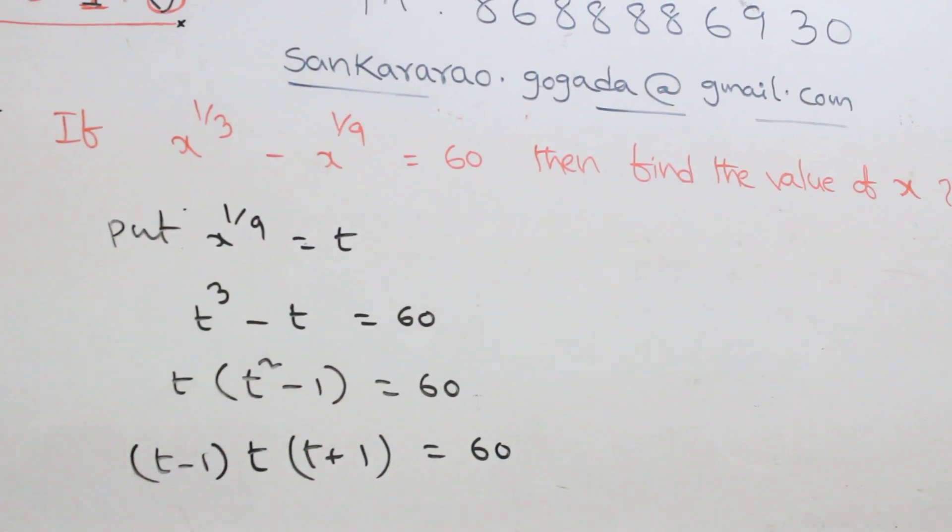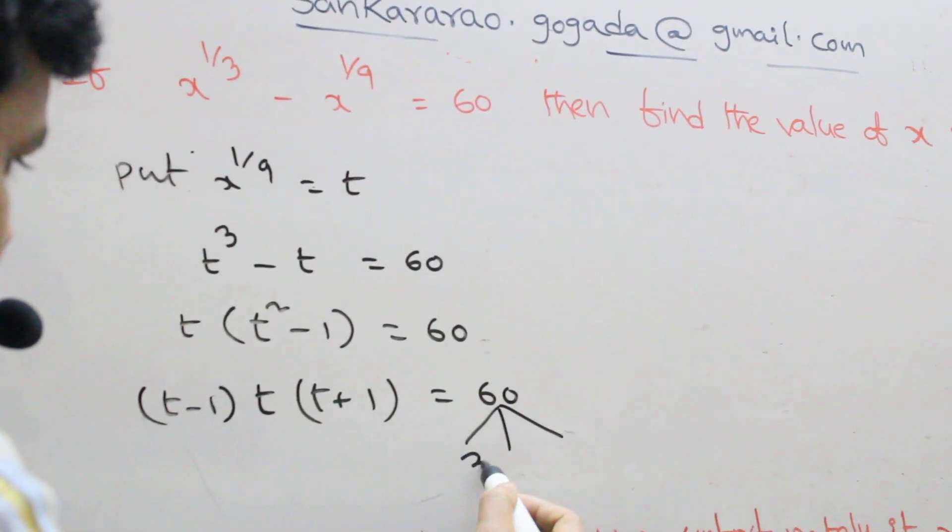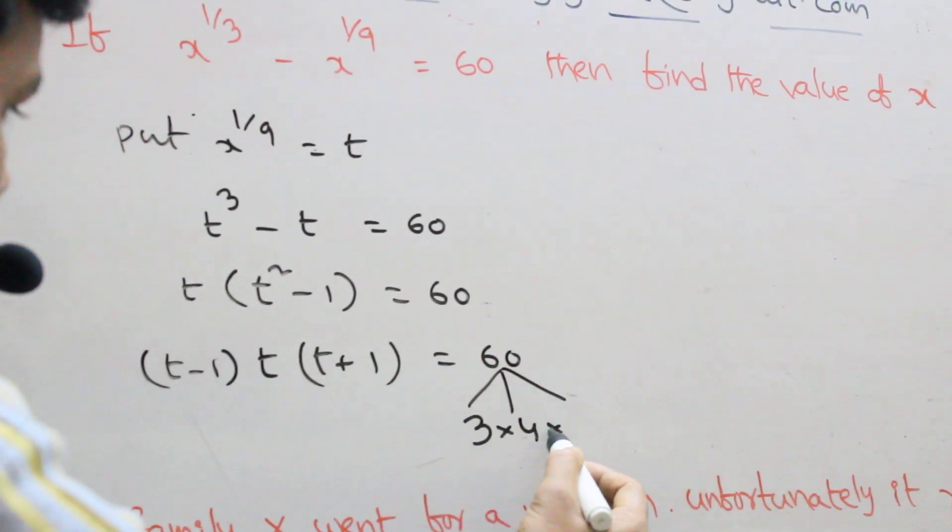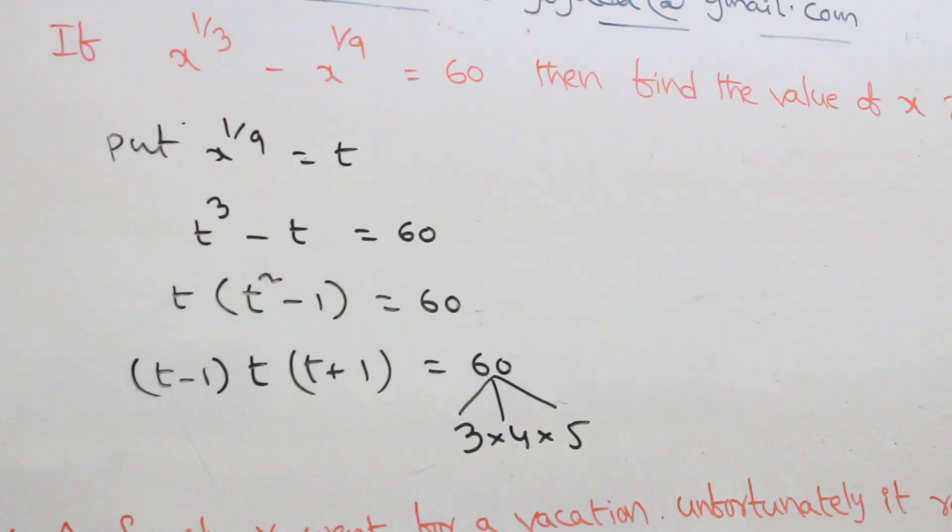In this one, any three consecutive numbers product. What are the three consecutive numbers? Three into four into five. Three, four, five is sixty. What in this middle one t? The middle one is the four. T equal to how much? Four.